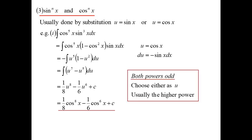So if both powers are odd, you can choose either. The smart way is to pull it out of the lower power — in other words, the other one will be the higher power — because there'll be less expansion to do. I ended up with just 1 minus cos squared to the power of 1, nice and easy. Whereas if I'd pulled the cos out, I'd have cos to the power of 4, which is cos squared squared — I'd have to expand that out. More work. So it's smarter to pull the du out of the lower power.